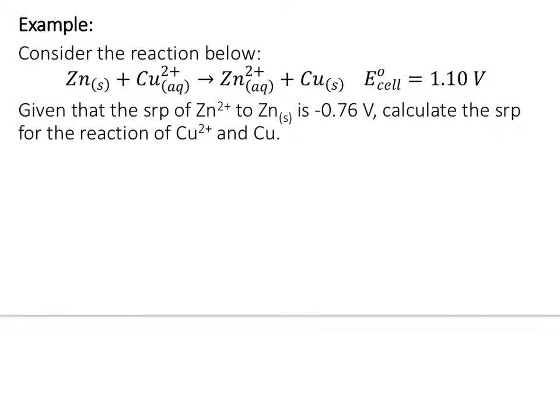So, here's a reaction. Considering that the standard reduction potential of Zn2+ to Zn solid is negative 0.76 V, calculate, basically, the SRP for Cu2+ and Cu. That's your overall cell potential. So, good luck. Spend a few minutes. Come back.